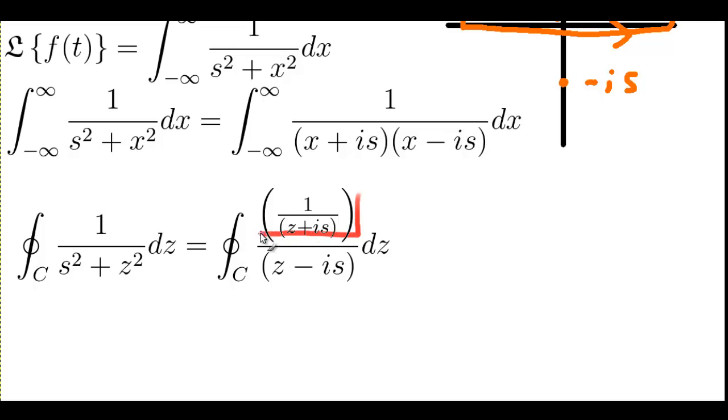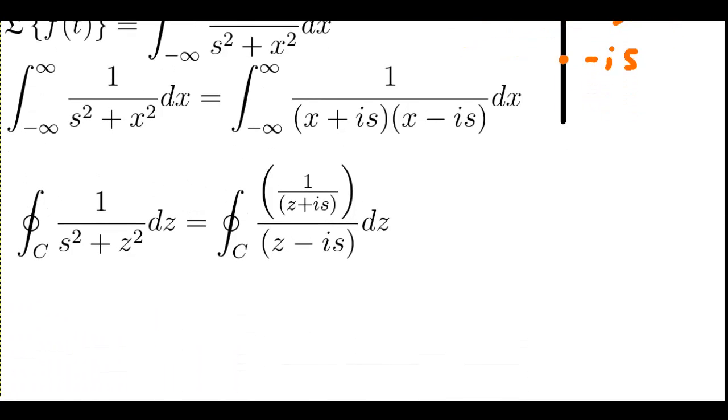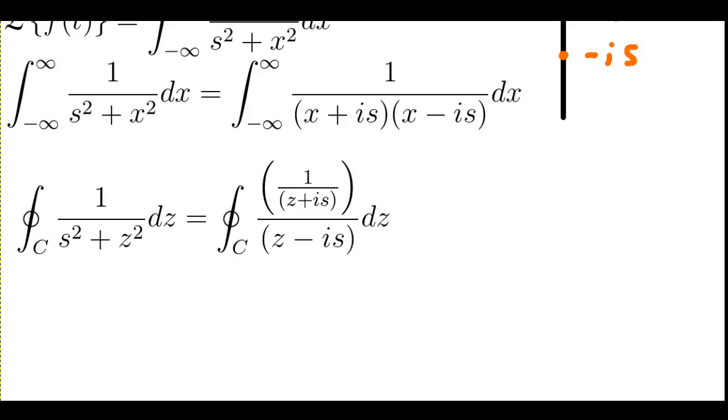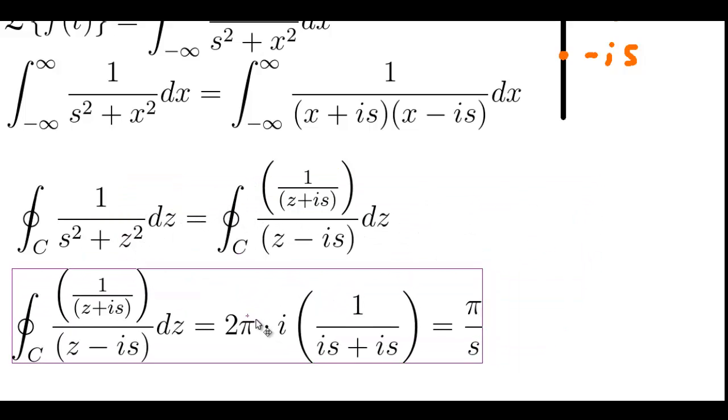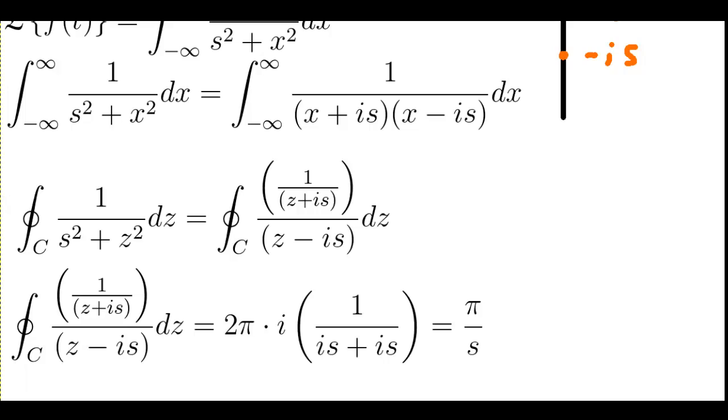This is going to be the function that we're interested in Cauchy's formula. And we're going to be able to just do 2 pi i times the residue there, which is just going to be 2 pi times i times 1 over 2is. Which is going to equal pi over s.